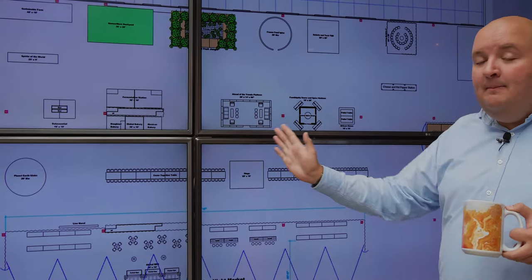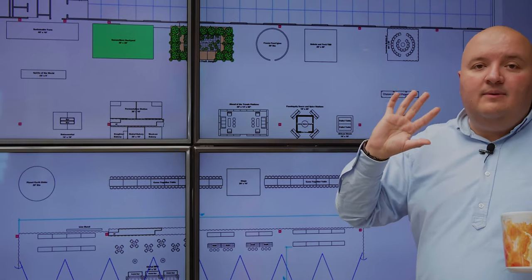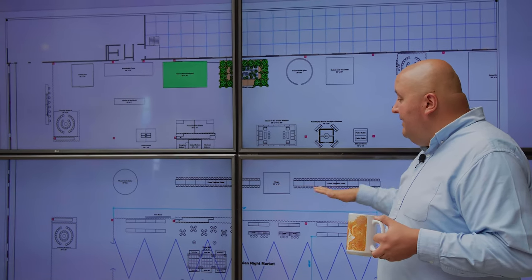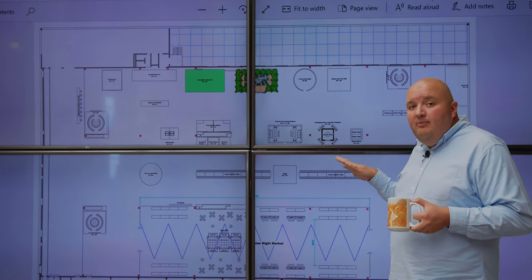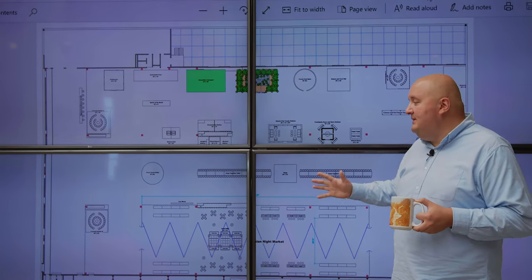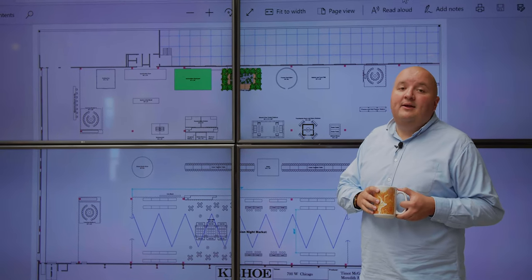And then right down the center of the space, we have this massive come together table. I cannot reiterate how big this space is. It's absolutely massive. And this table runs through the entire center of it. And at one point, we're going to have the world's longest charcuterie board here. We have a stage in the middle for even more exciting content that pops up at any given time. But this is where at the end of Foodscape, we're all going to come together and have a meal.